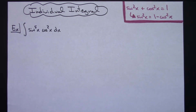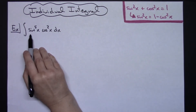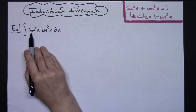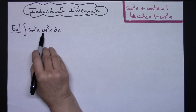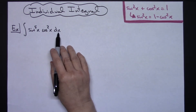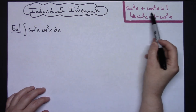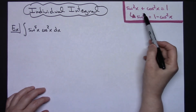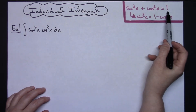In this video I'm going to be working out an individual integral. We're going to take a look at the integral of sine x to the fifth power times cosine x squared dx. I am going to be using the identity sine squared x plus cosine squared x equals 1.